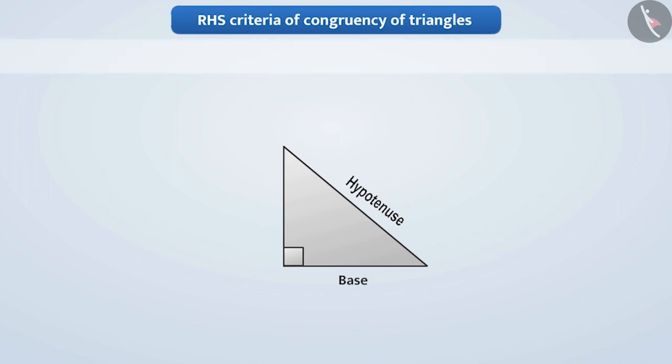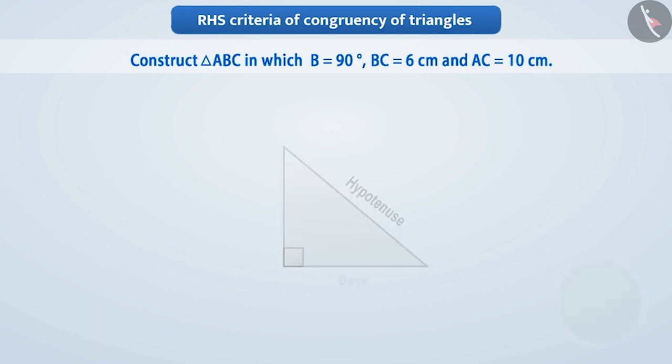Pause the video and create triangle ABC which has angle B equals 90 degrees, BC equals 6 cm, and AC equals 10 cm. Let us tell you.